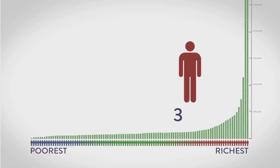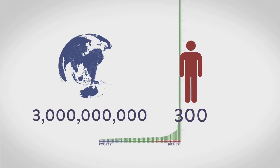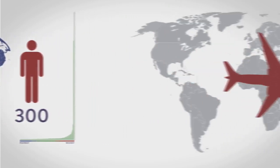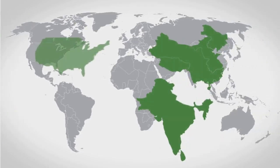The richest 300 people on earth have the same wealth as the poorest 3 billion. So the number of people it takes to fill a mid-sized commercial aircraft have more wealth than the populations of India, China, the US, and Brazil combined.